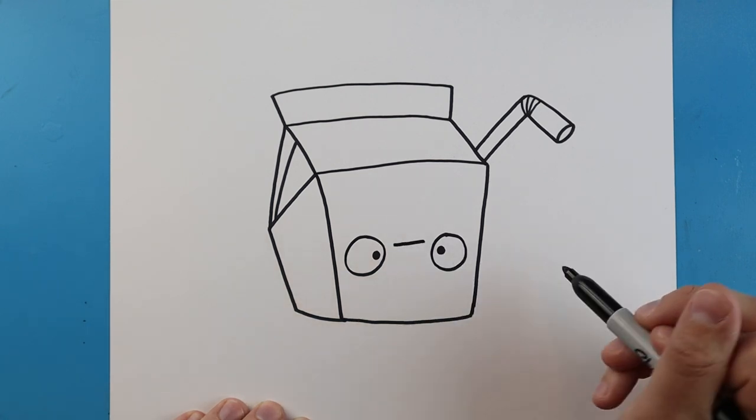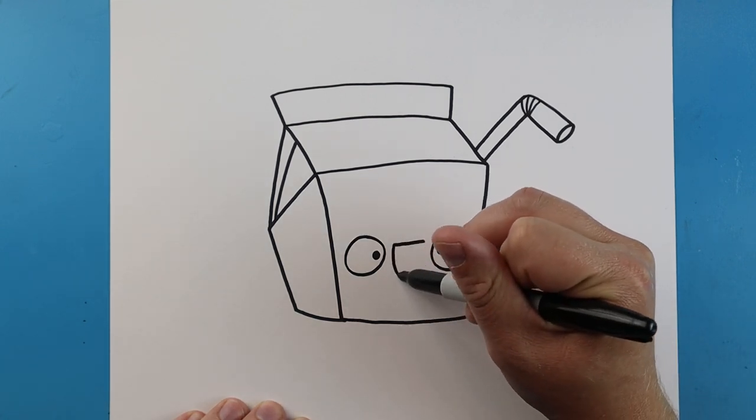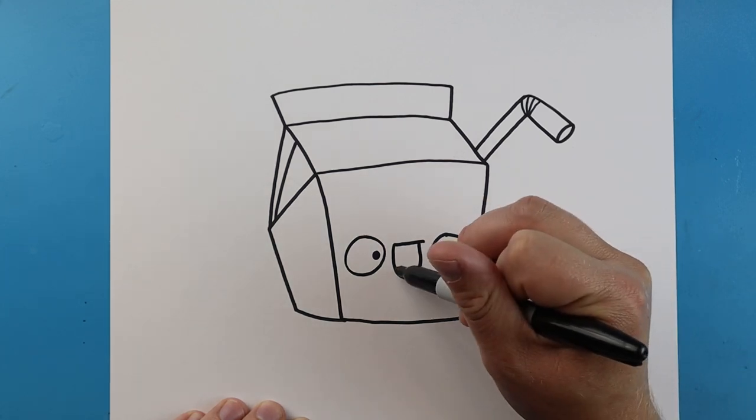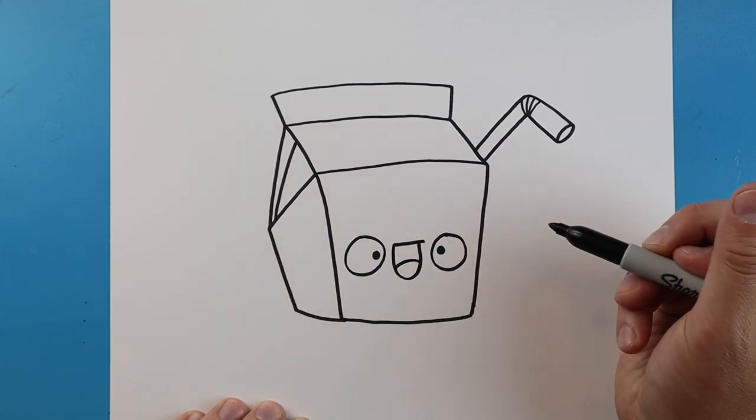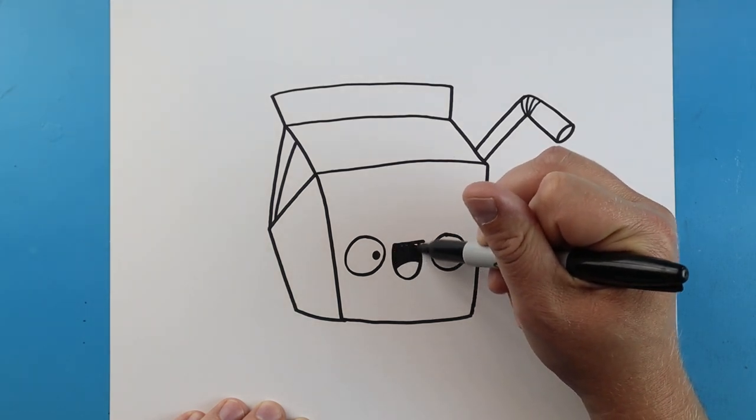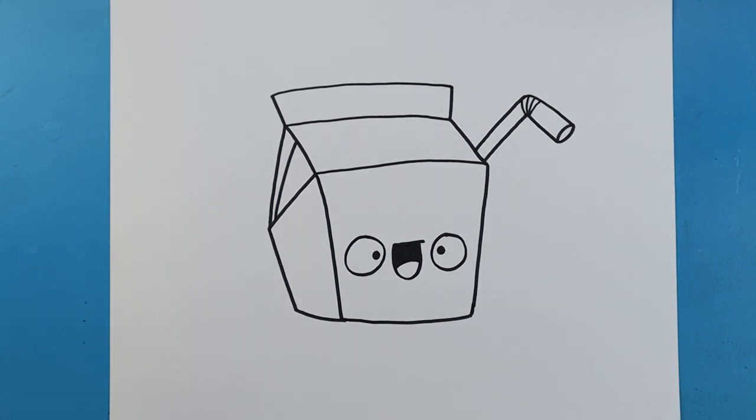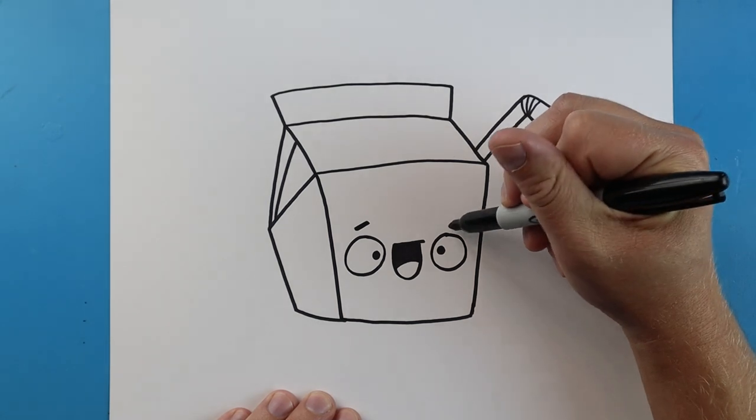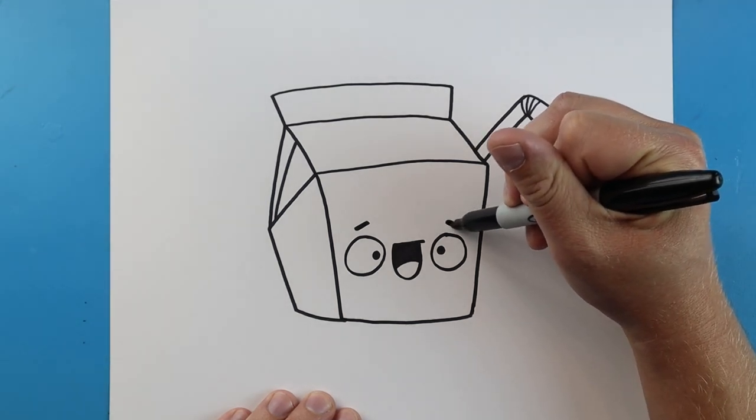Make a line that comes across with a line that goes down and up. Add a little sad face in here for the tongue and color this part in. I'm also going to add two little lines above for some eyebrows.